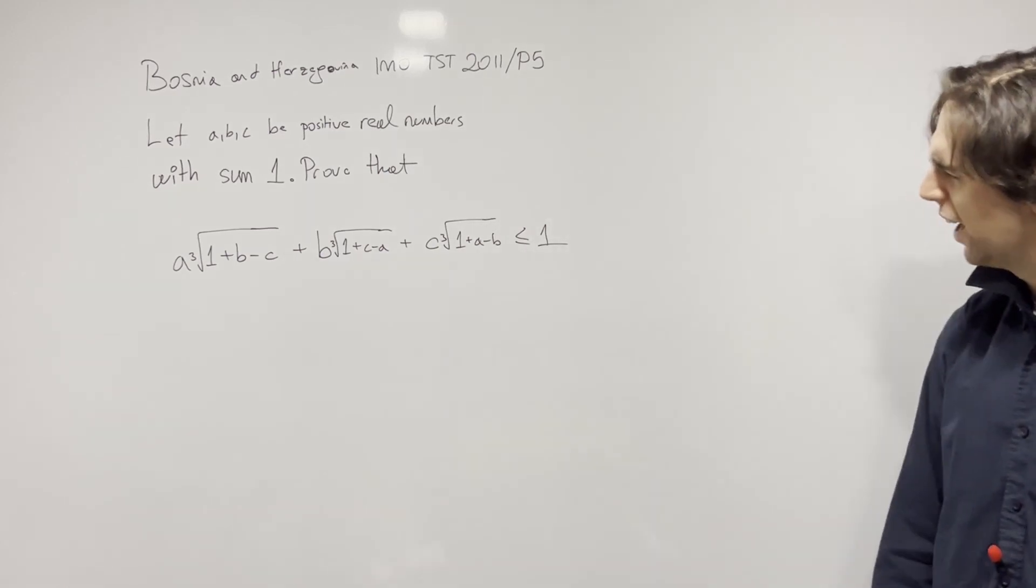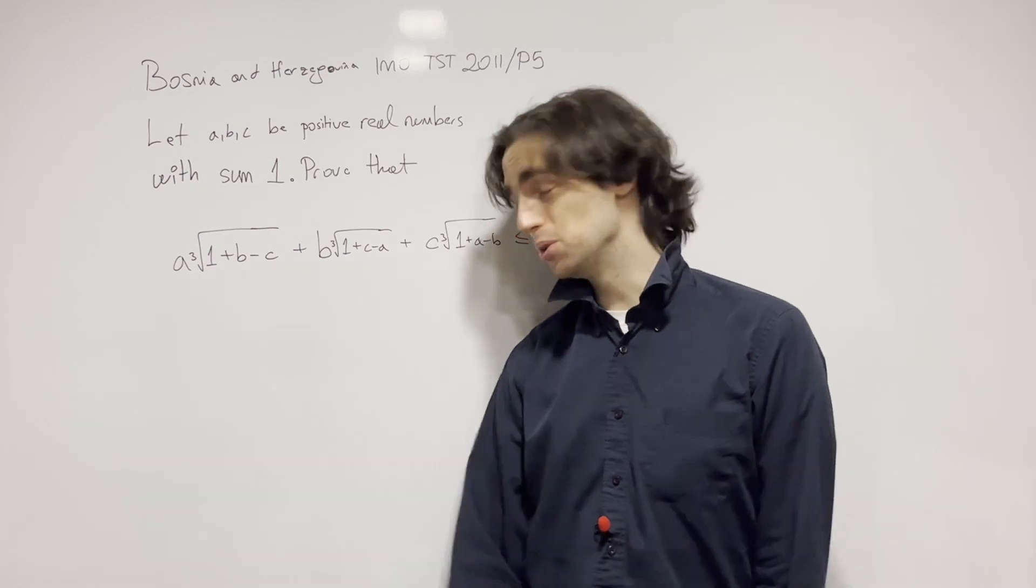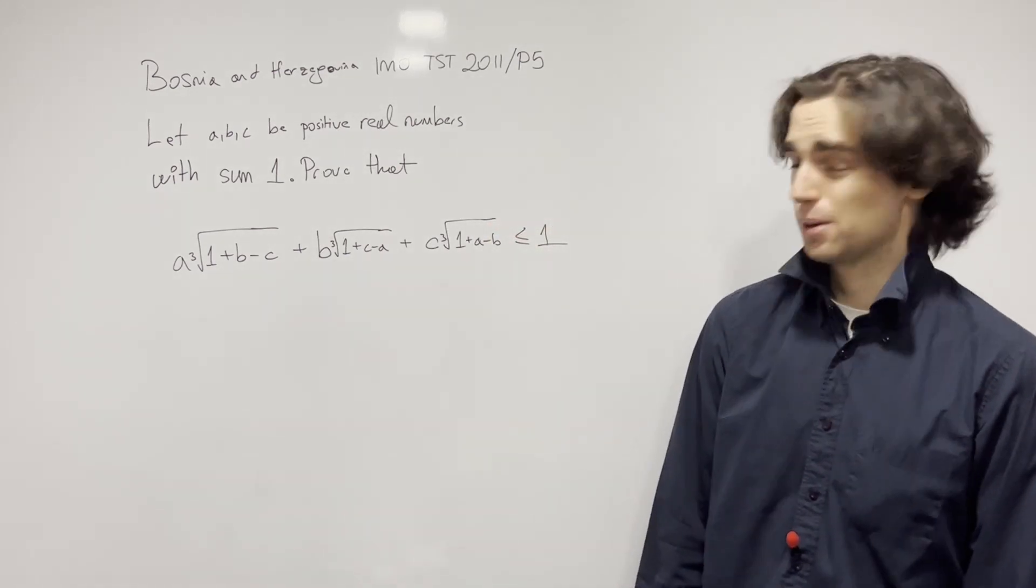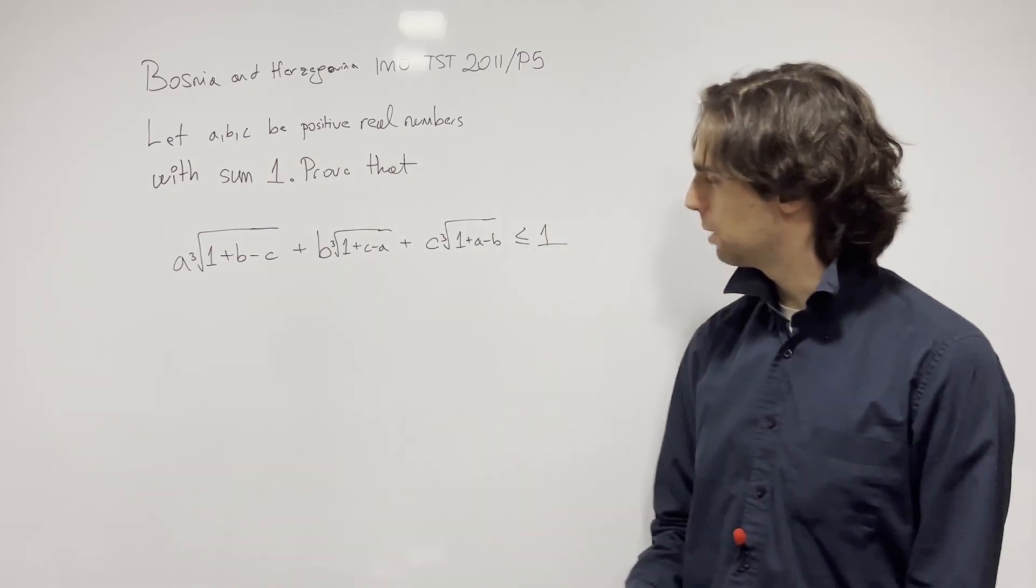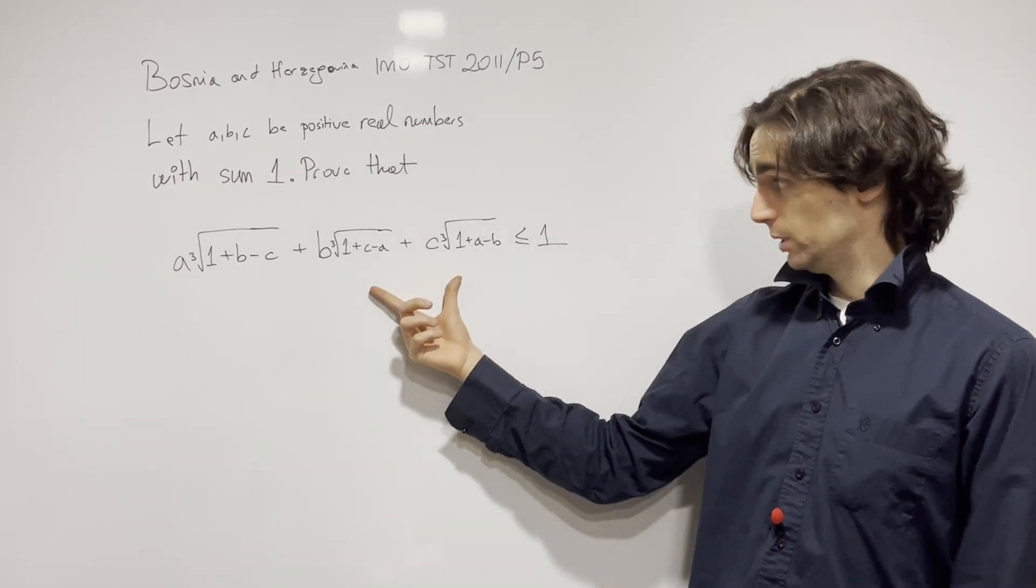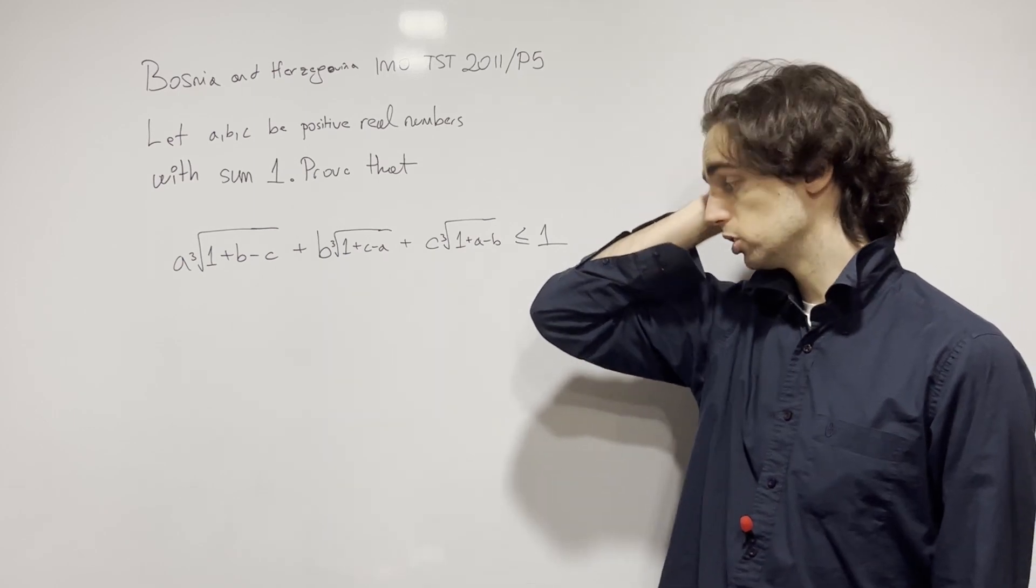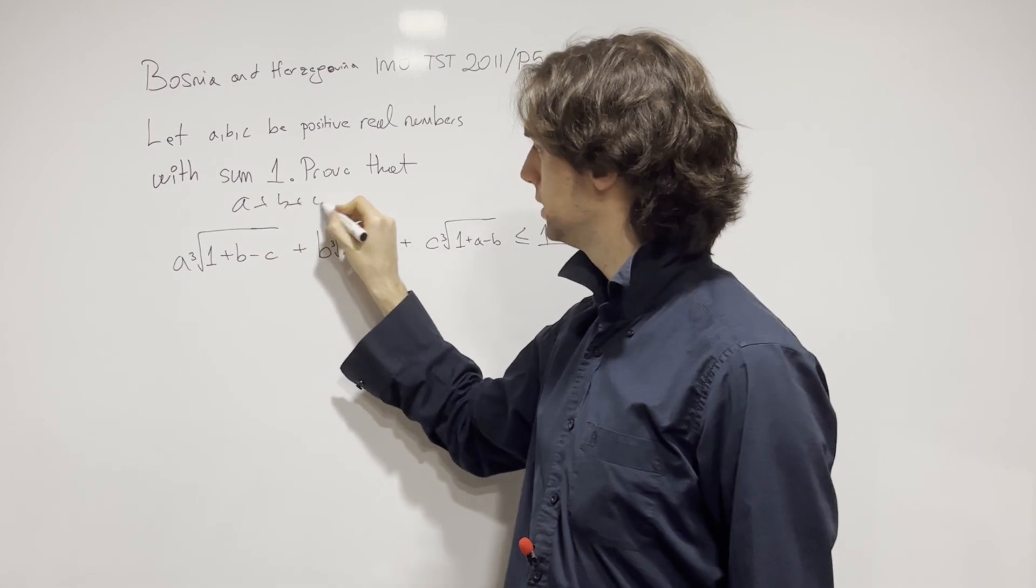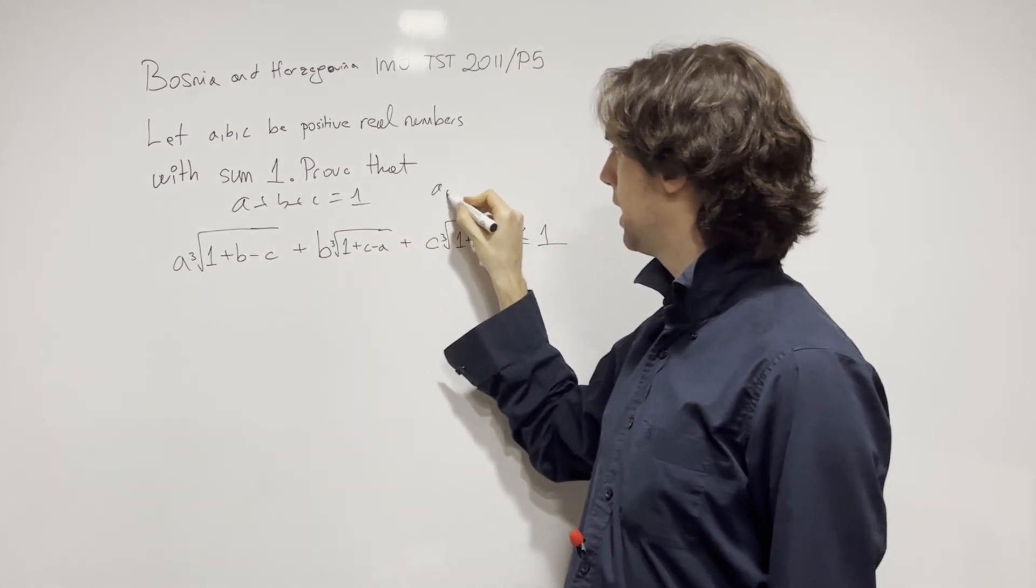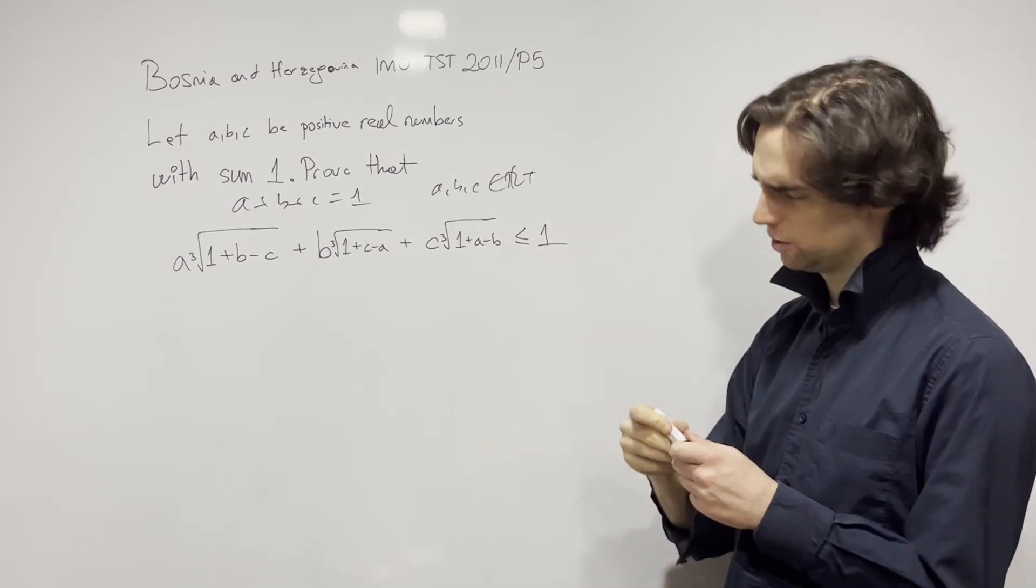So what do we have here? We have the cube root. What are we going to do with that? Some ABC positive real numbers, their sum is 1. We need to prove this. So what is the first thing that you notice? Let's just write A plus B plus C is equal to 1. ABC are positive real numbers. And this is the inequality. So what do you notice here?